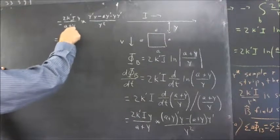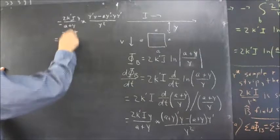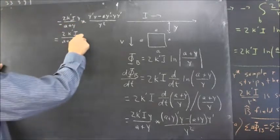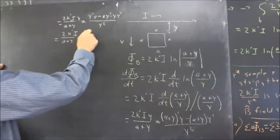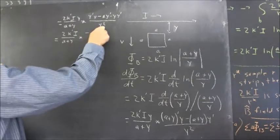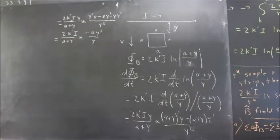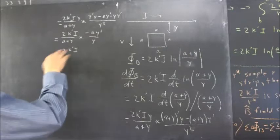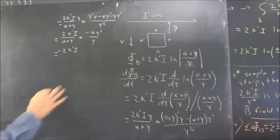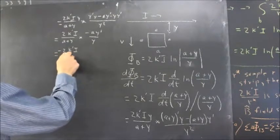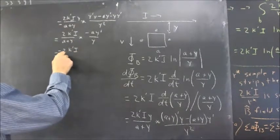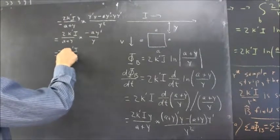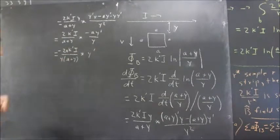That comes out rather simply as 2k prime i over (a + y). I'm leaving this y out for a moment — I'm going to divide this by the y squared, and then it's going to be times negative a · y prime over y, the y squared being divided by the y here. So that's 2k prime i with a negative — and I'm being a little loose with negative signs here regarding orientation of the loop — but it's going to be this over y times (a + y), and we'll have an a out here. So I've got this as a multiple of y prime.